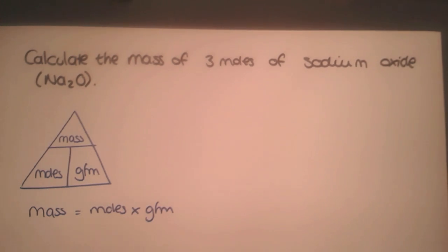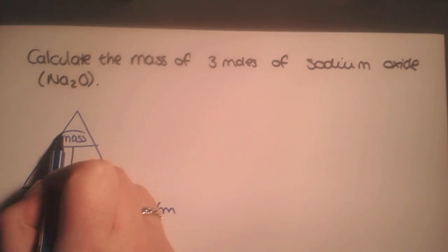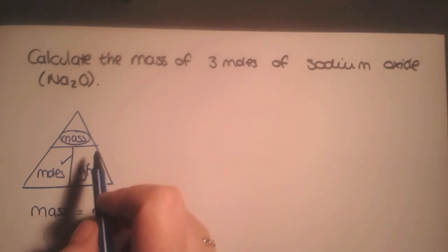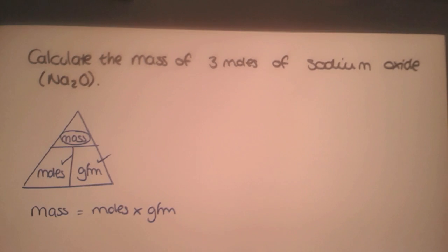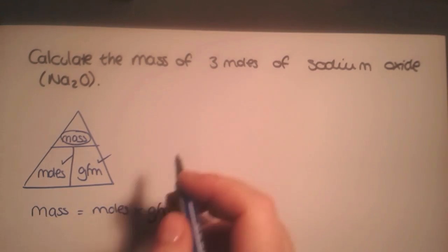In this first example we are trying to find the mass of 3 moles of sodium oxide and we've been given the formula. To use the triangle you would circle the thing that you're looking for - we're looking for mass. We've been given the number of moles and we can calculate the gram formula mass from the formula. We have 2 out of 3 parts of this triangle which means we can calculate the third.